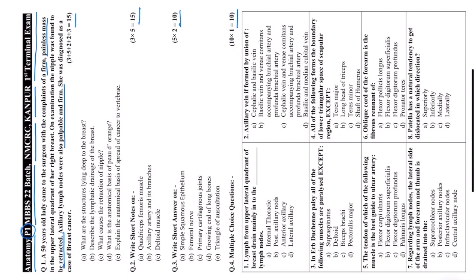The first sub-question asks about the structures lying deep to the breast — the bed of the breast — which is mainly pectoralis major, serratus anterior to a little extent, external oblique abdominis, and a little bit of the rectus sheath. The next part asks to describe the lymphatic drainage of the breast: the superficial, deep, intercostal, and to the opposite breast, including the shedding of cells reaching to the diaphragm and Krukenberg's tumor in secondary carcinomas.